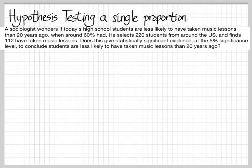This is going to be my sample question. We have a sociologist wondering if today's high school students are less likely to have taken music lessons than 20 years ago, when around 60% of high school students had. He selects 220 students from around the U.S. and finds 112 have taken music lessons. Does this give statistically significant evidence at the 5% significance level to conclude students are less likely to have taken music than 20 years ago?